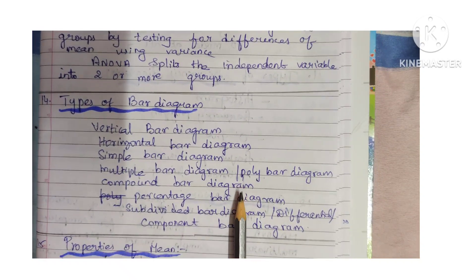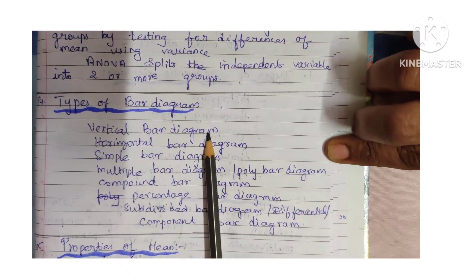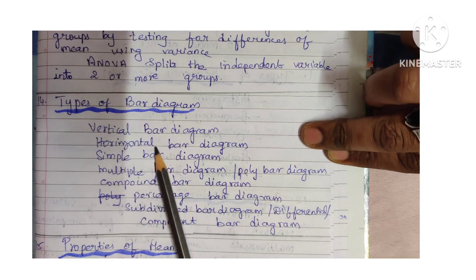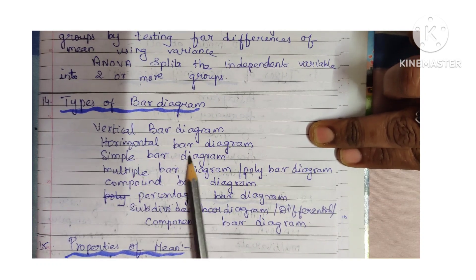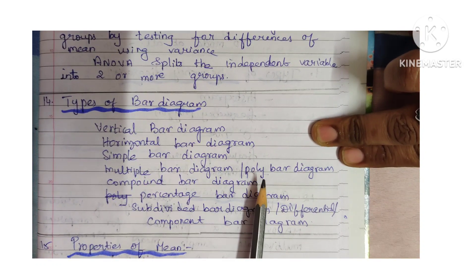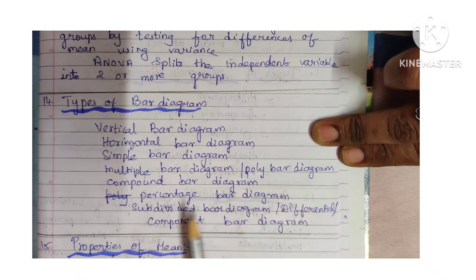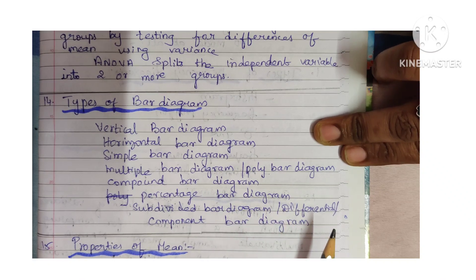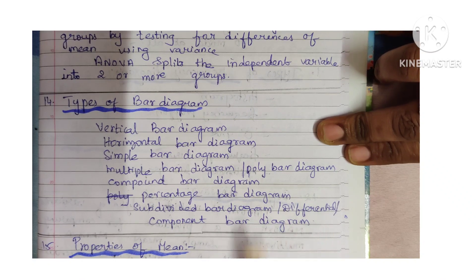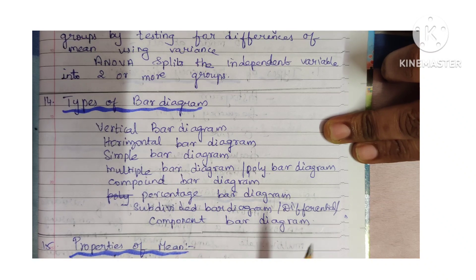Types of bar diagram: vertical bar diagram, horizontal bar diagram, simple bar diagram, multiple bar diagram (or poly bar diagram), compound bar diagram, percentage bar diagram, subdivided bar diagram, and differential component bar diagram.